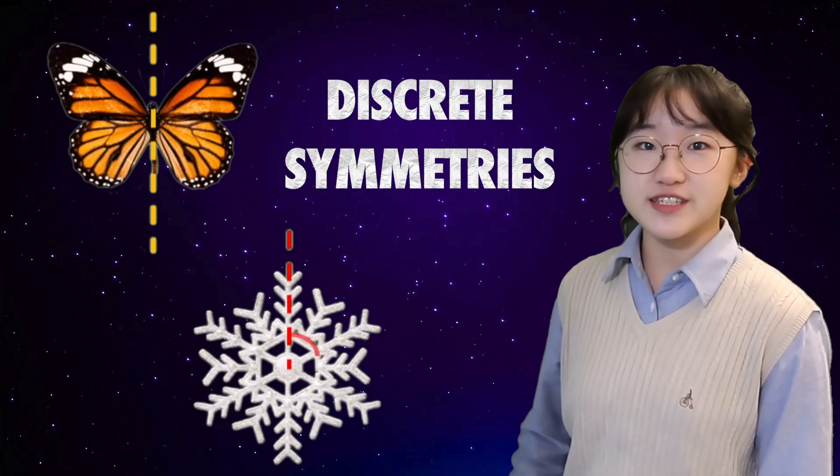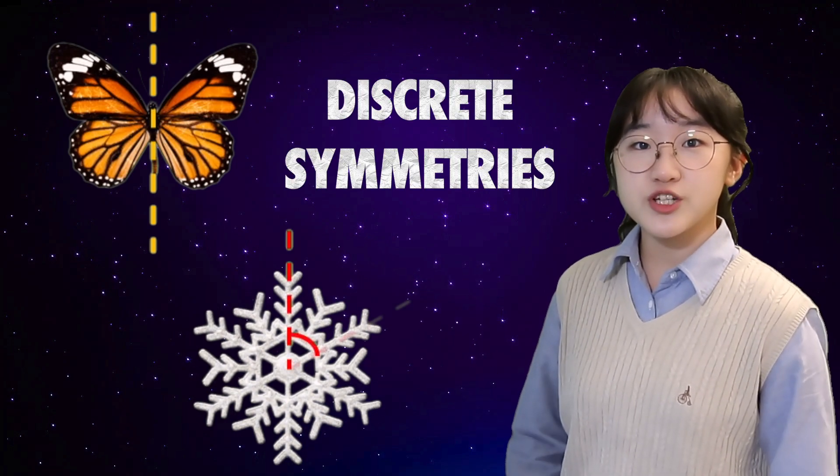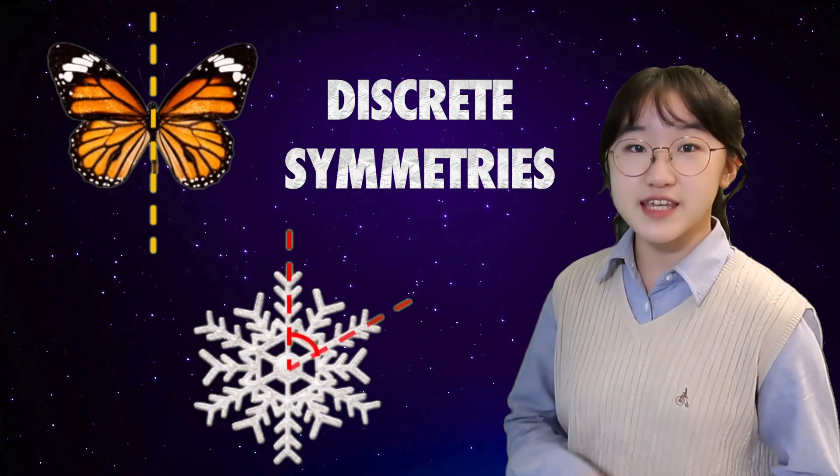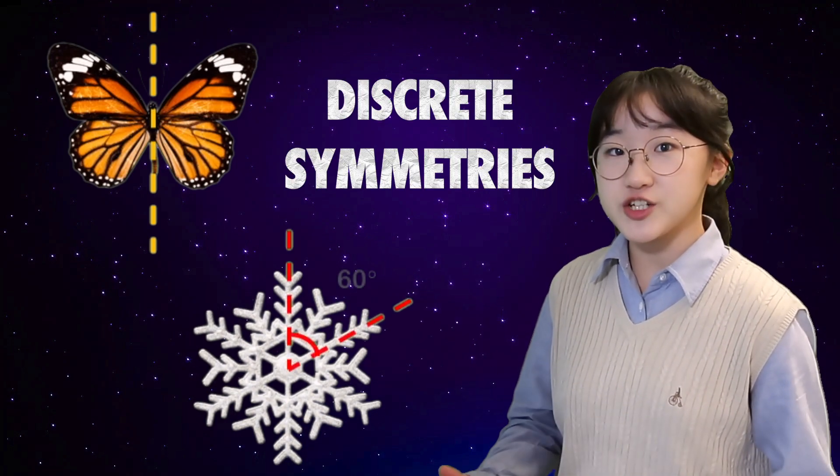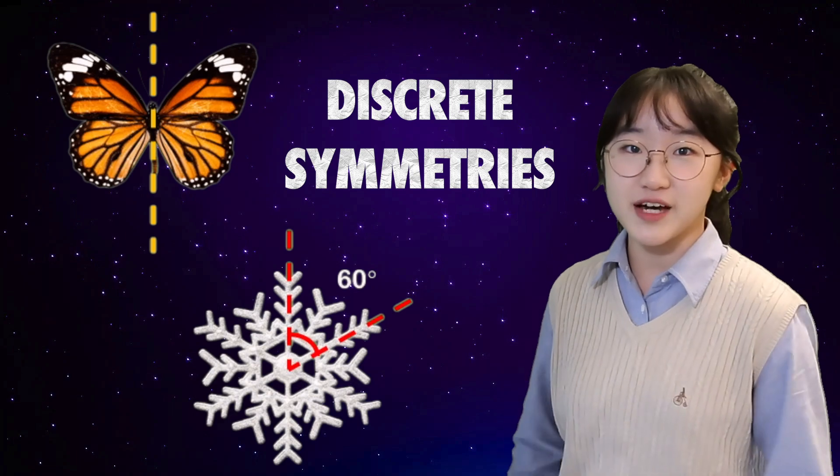So what are symmetries? We say a butterfly is symmetric under mirror reflection, and a snowflake is symmetric under 60-degree rotation. These are discrete symmetries, in which one appears the same after a change by a specific amount.